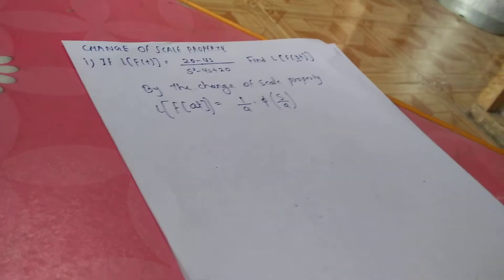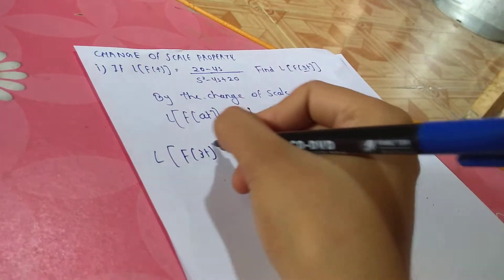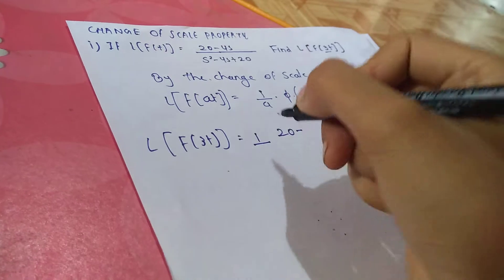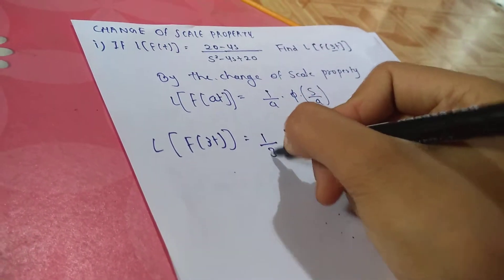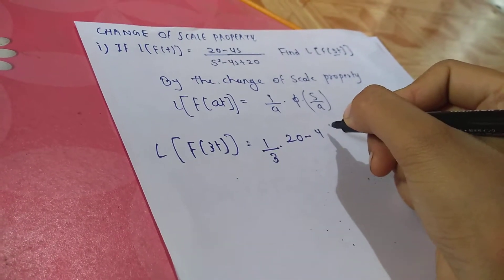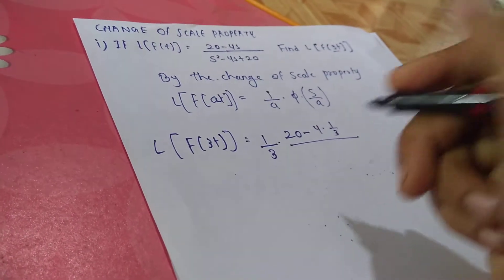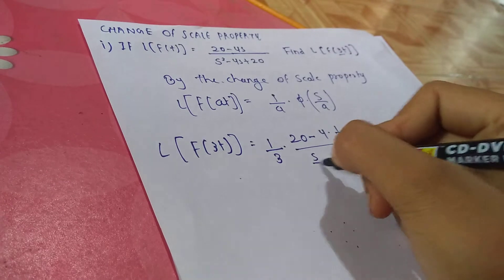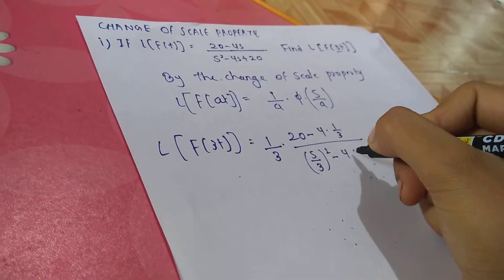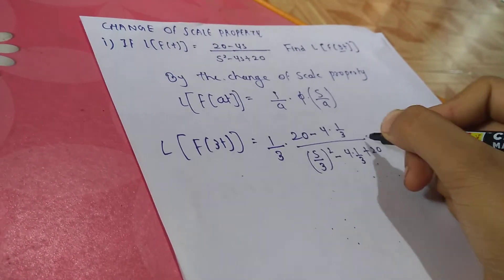So Laplace of f(3t) equals (1/3) into [20 minus 4 divided by 4 into (1/3)], divided by (s/3) whole square minus [4 by 4 into (1/3)] plus 20.